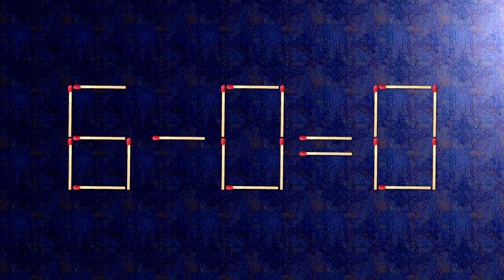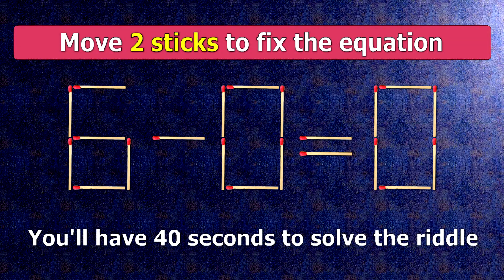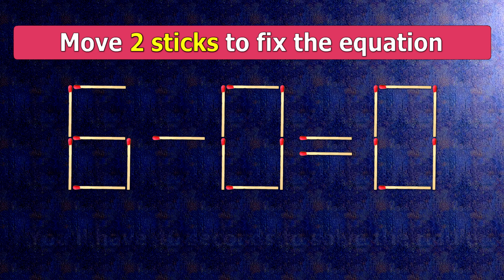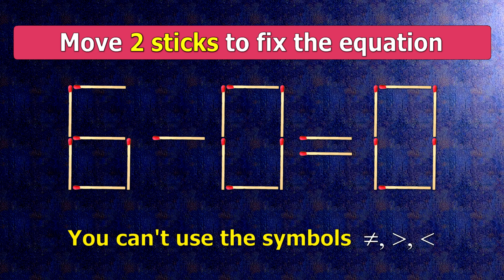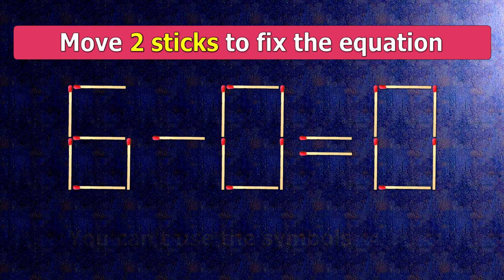We have the equality 6 minus 0 equals 0. Our equality is wrong. We need to move two matches to make our equality correct.